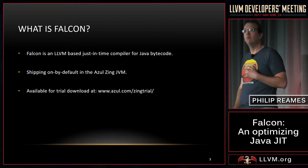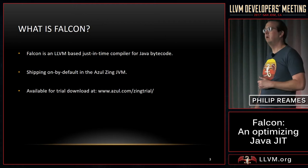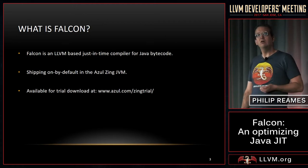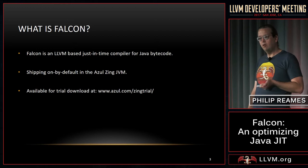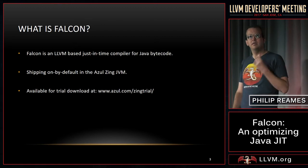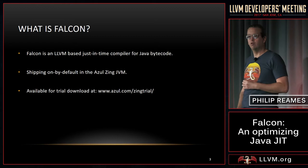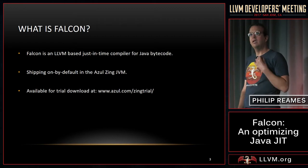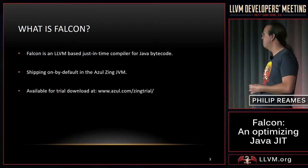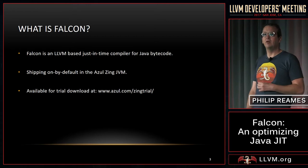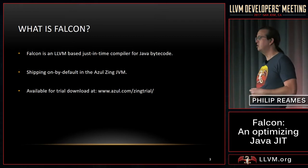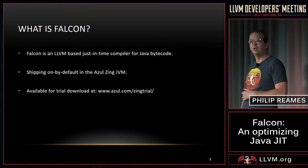Starting off with what is Falcon: Falcon is a Java bytecode JIT. An important note is that it is a tier 2 JIT, and we'll get into details as to what that means as we go through. It is available in the shipping product — you can go and download it off the web today and play with it, including getting access to all of the LLVM IR it generates and playing with all of the LLVM tooling.